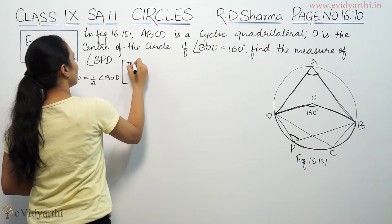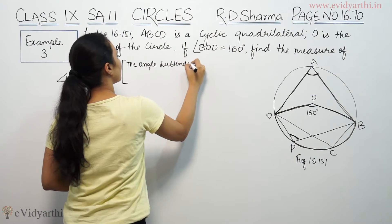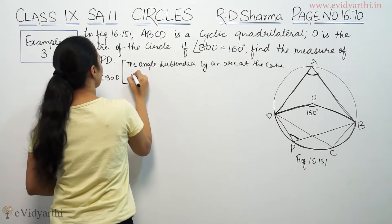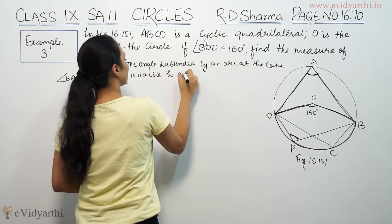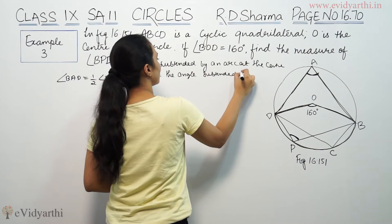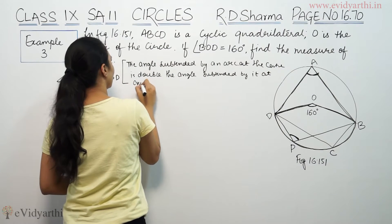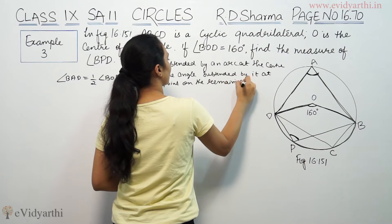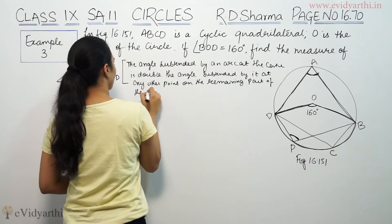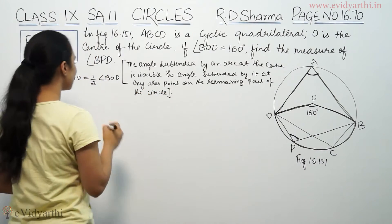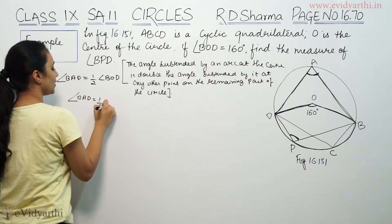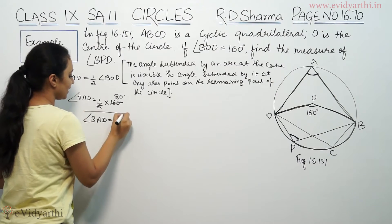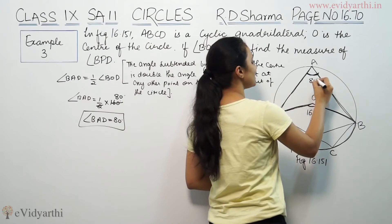The reason you write here is: the angle subtended by an arc at the center is double the angle subtended by it at any other point on the remaining part of the circle. So from here, BAD equals half of BOD, that means half of 160 degrees, which will be 80 degrees.